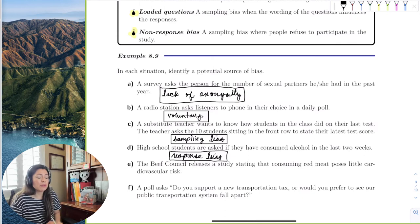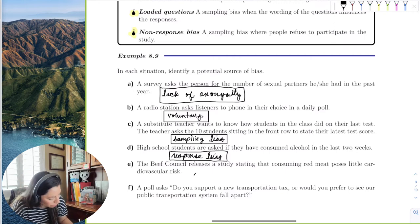A beef council releases a study stating that consuming beef—red meat—poses little cardiovascular risk. A beef council did a study saying beef is good for you. That's a little bit of self-interest for me. So, self-interest study.